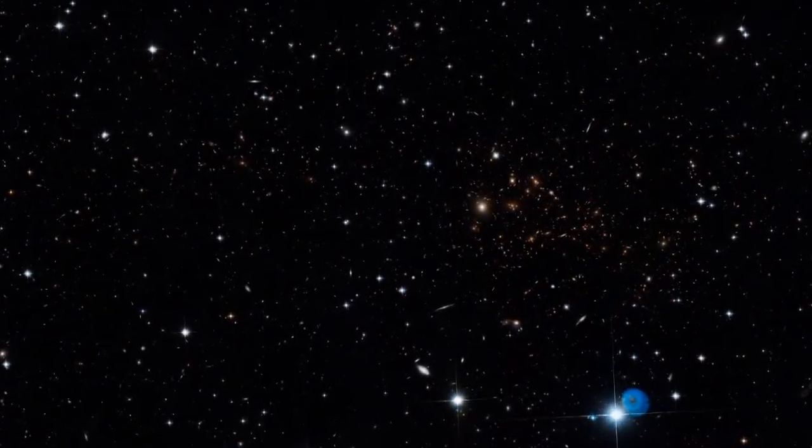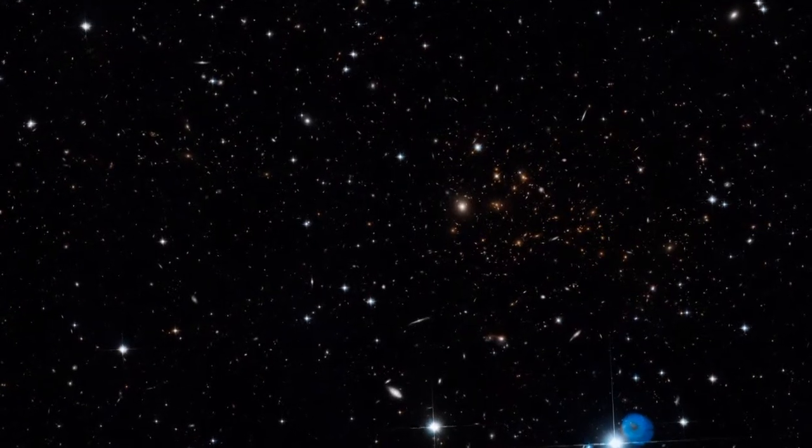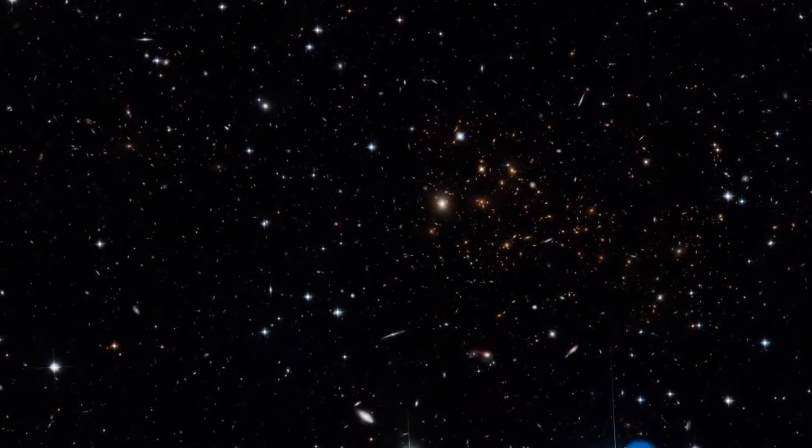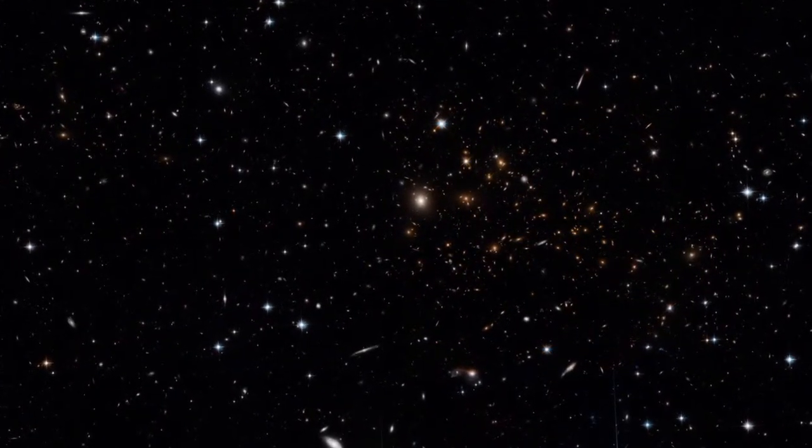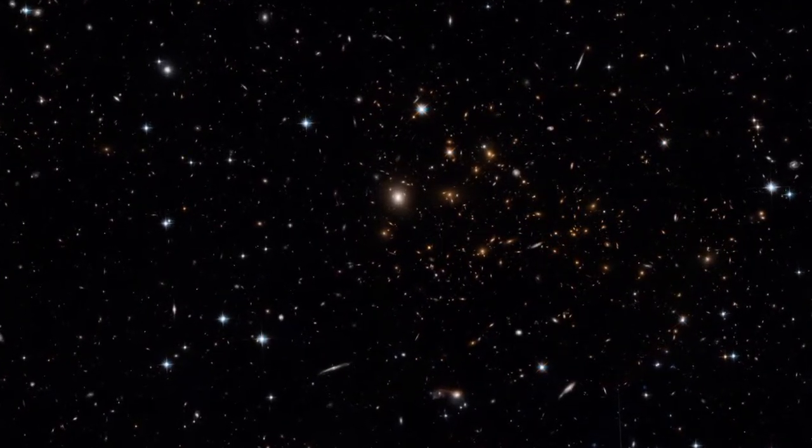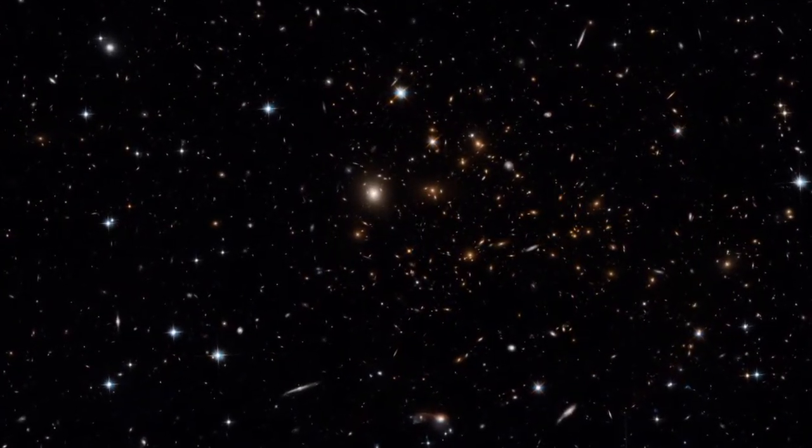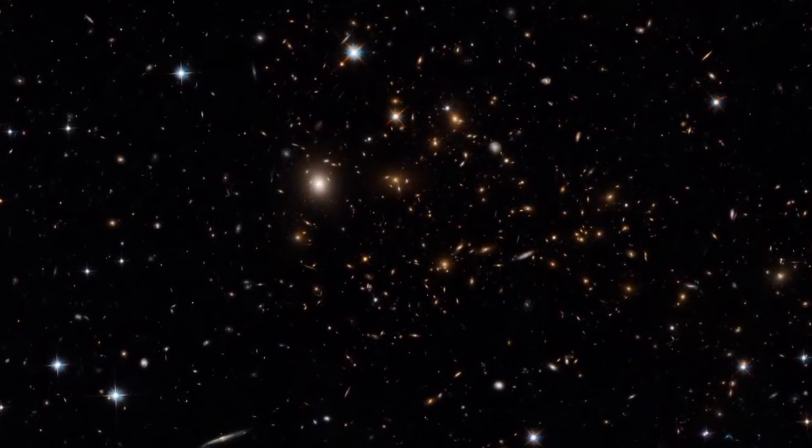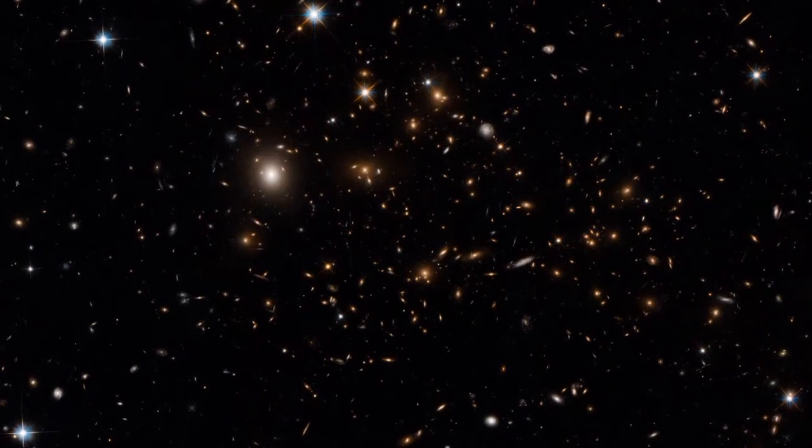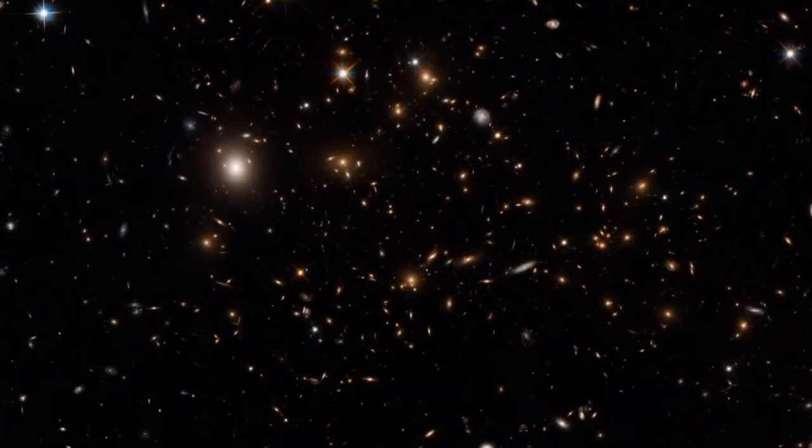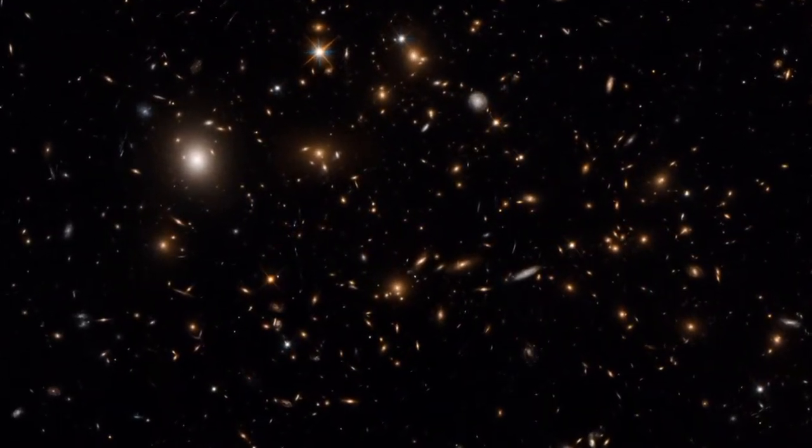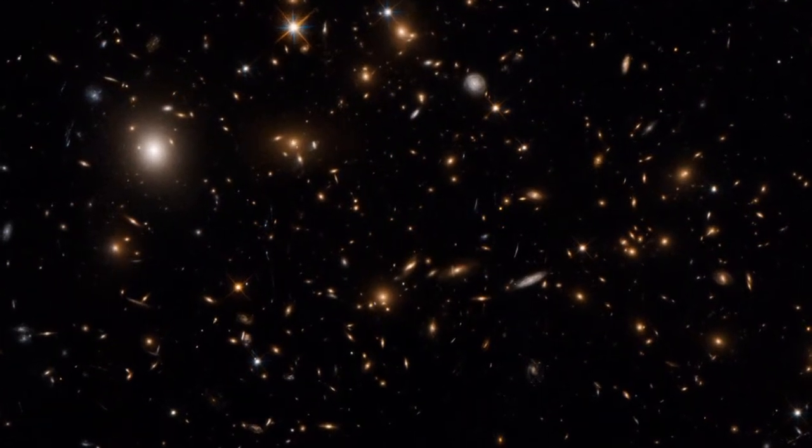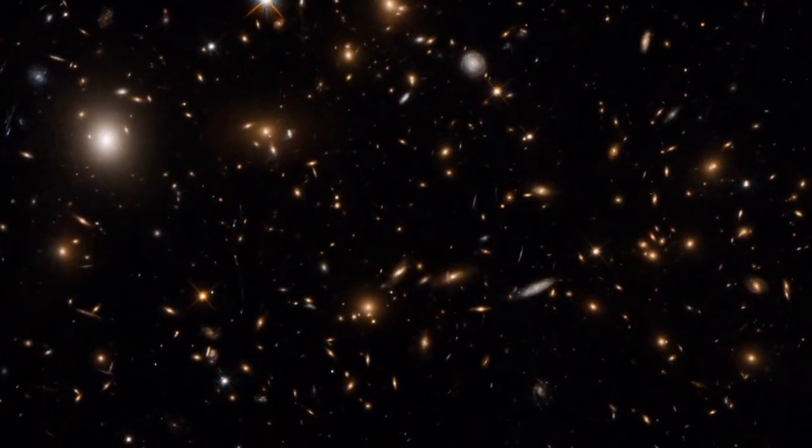Finding one of these filaments is no easy task. First, you need to look where you're likely to find one. Theories say galaxy clusters form where filaments of the cosmic web meet, with the filaments gradually funneling galaxies and dark matter into the clusters. So, the team focused Hubble on the galaxy cluster MAXJO717, which is known to still be growing.